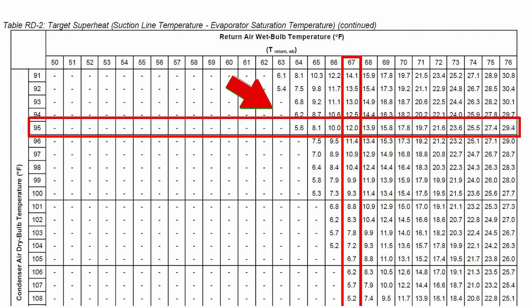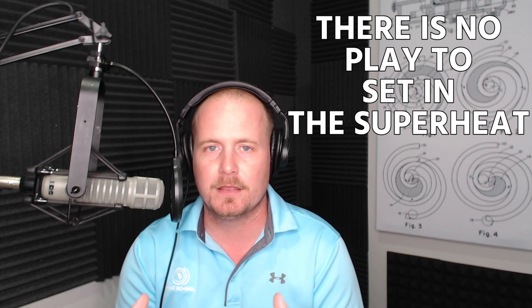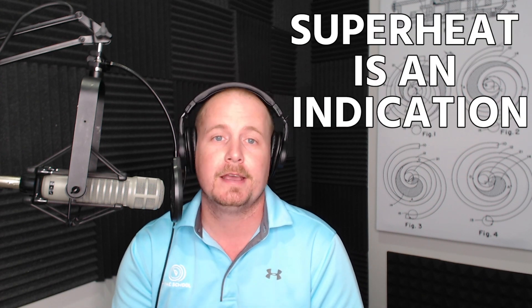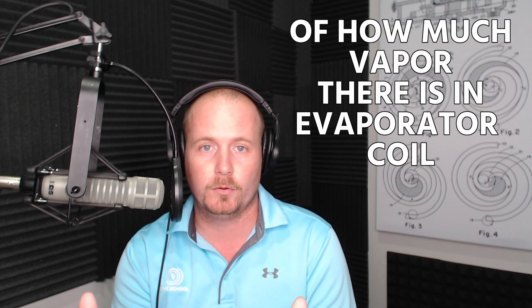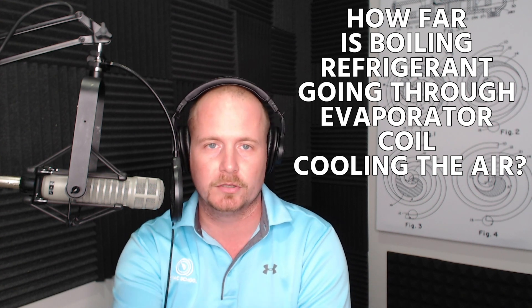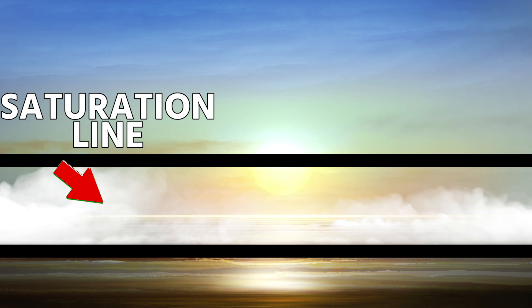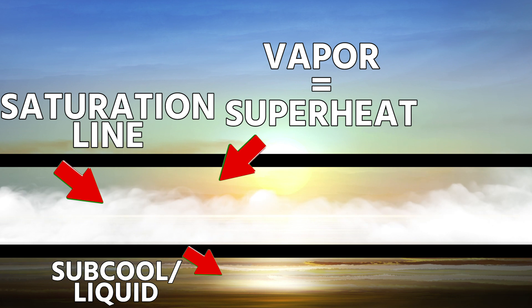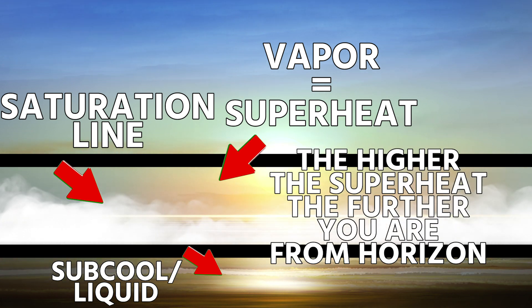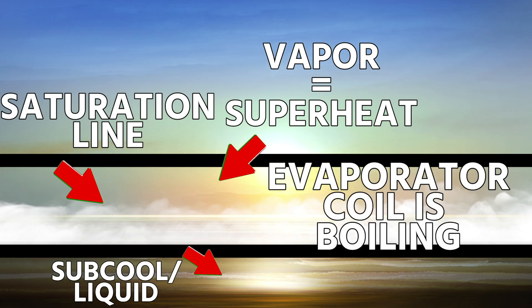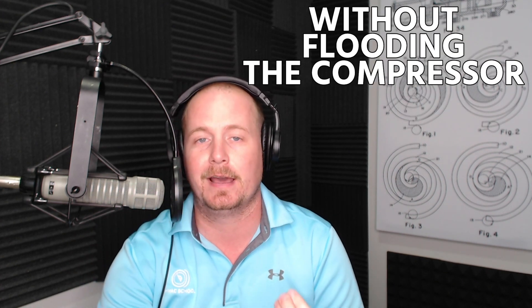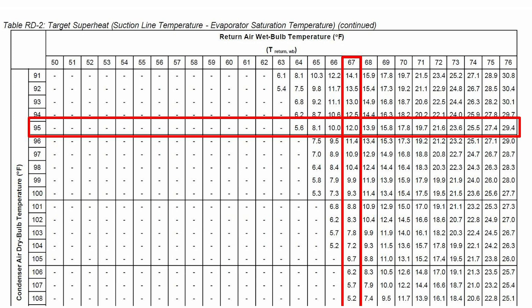Now let's talk about what causes the target to change. Looking at this chart, if we keep the 95-degree outdoor temperature static and the indoor wet bulb temperature increases, the target superheat also increases. With a fixed metering device, you have no ability to adjust the metering device to set superheat. Superheat simply indicates how much vapor is in the evaporator coil — how far the boiling refrigerant is traveling before picking up sensible heat. Using the horizon analogy: vapor is above the ocean, liquid is below it, and higher superheat means you're further from that saturation line.